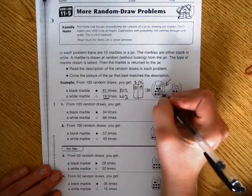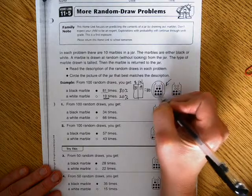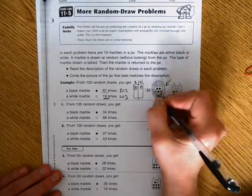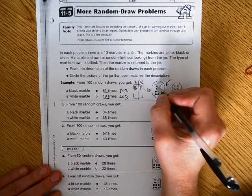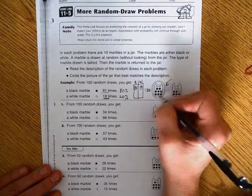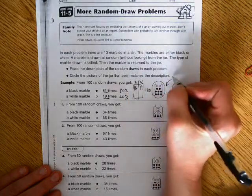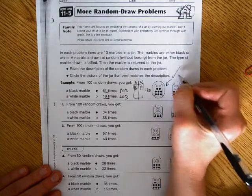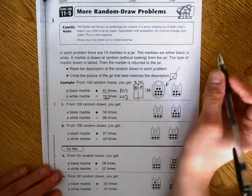1, 2, 3, 4, 5, 6, 7, 8. There are 8 black marbles, 2 white marbles. We would expect that since it's 8 out of 10, that's 80%, that this jar would indeed be the one that we pulled the marbles out of.